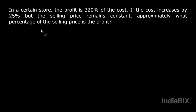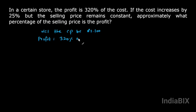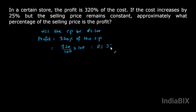Let the cost price be 100 rupees. It is given that the profit is 320% of the cost price. So the profit is 320% of 100 — converting the percent into a fraction, we divide by 100 and multiply by the cost price of 100.